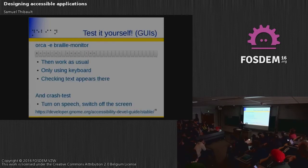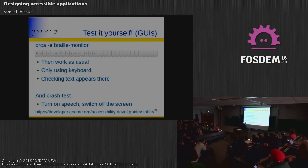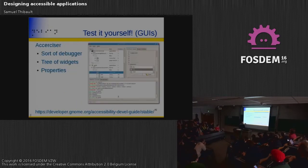You can test yourself with Orca. You can enable a Braille monitor so you can see what is actually showing up on the Braille device. You can also do a crash test: turn on speech and then try to use your application — you will see that it's really hard. Exerciser shows you the tree as the screen reader sees it, so you can check that all the information shows up.